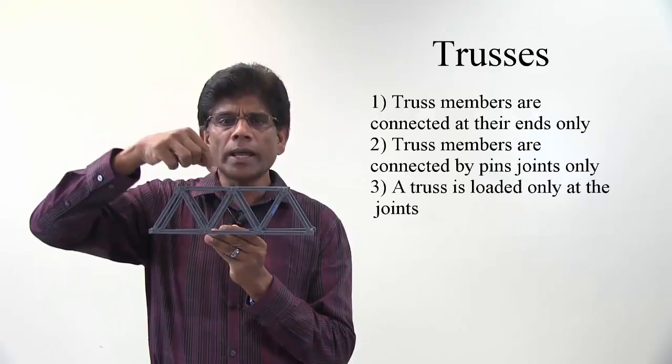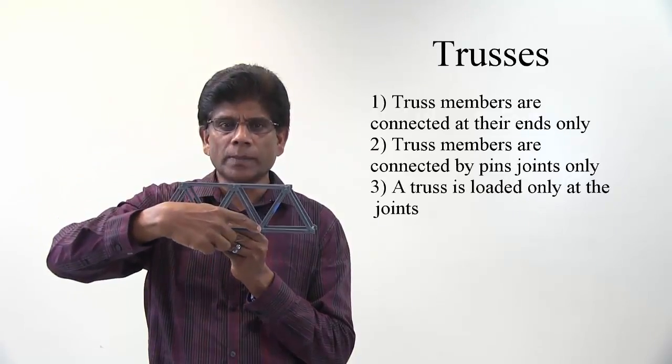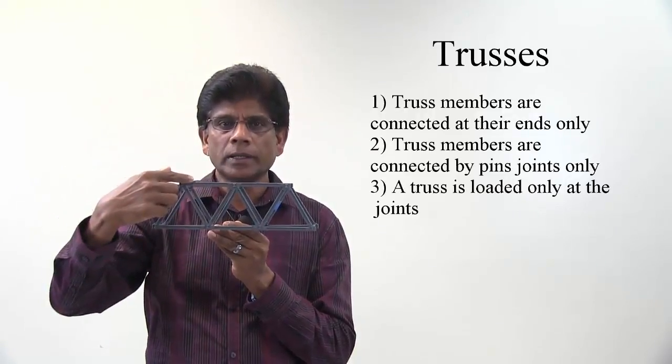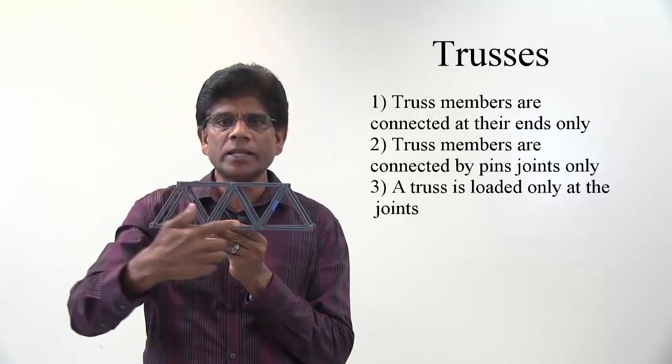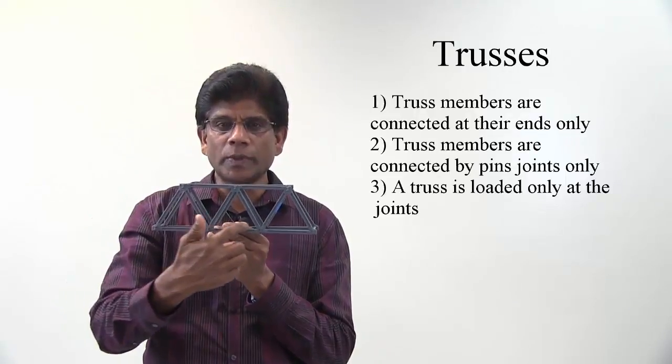A truss is loaded only at the joints. For example, here, here, here. This means the load can be applied at these joints in the bridge, not in between the members.